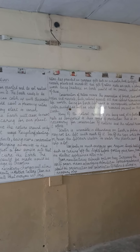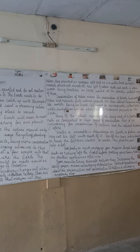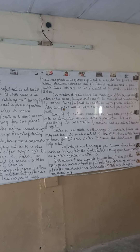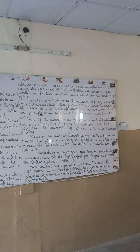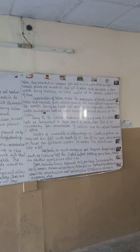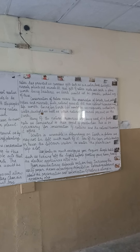Existence on earth would not be possible without any of these. Conservation of nature means the preservation of forests, land, water bodies and minerals, fuels, natural gases, etc. All these natural resources make life worth living on earth.